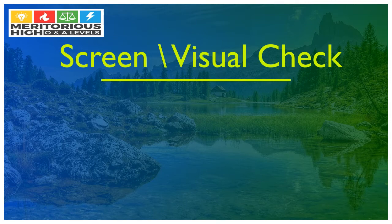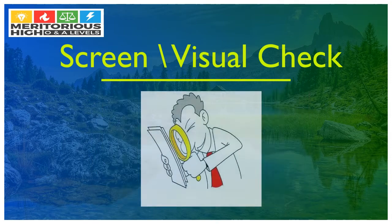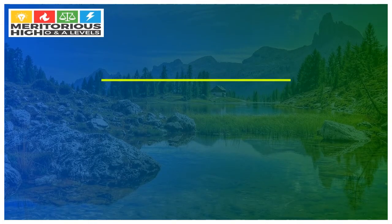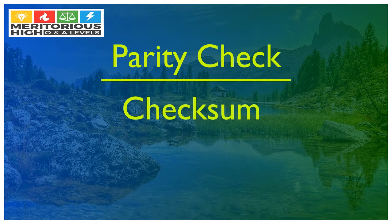Screen or Visual Check. This is basically proofreading. The data that has been entered into the computer is visually checked by a human, either on screen or from a printout, to ensure that it matches the data source. The remaining two techniques, Parity Check and Checksum, are already discussed in sections 2.3.1 and 2.3.3.